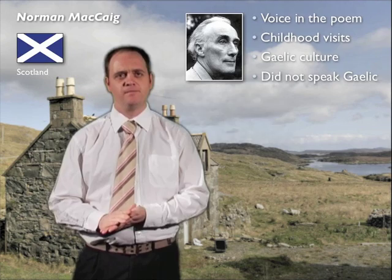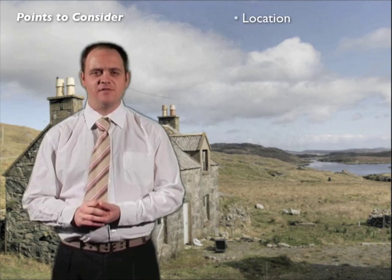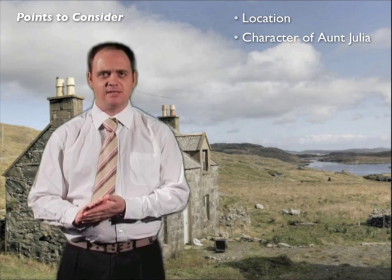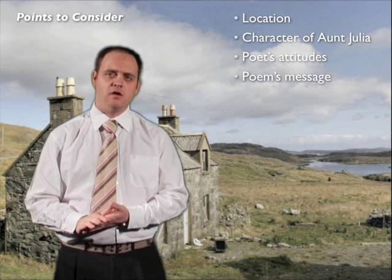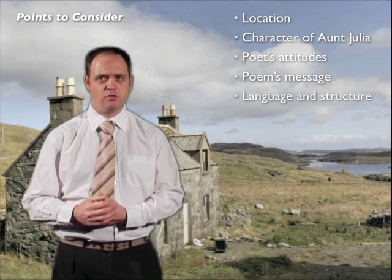There are several points to consider in the poem. The first is the location — McCaig's memories give us a visual image of the house his aunt lived in and the surrounding area. The character of Aunt Julia herself is also very important, as are the poet's attitudes towards both her and the location. We will also look at the poem's message, which contains wider points about Gaelic culture in general, and finally the language and structure of the poem, focusing on quotations you could use to support your points in your answer.